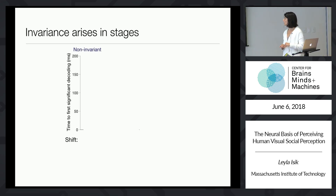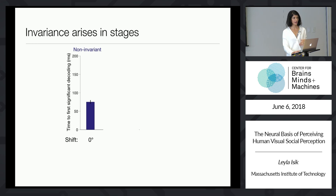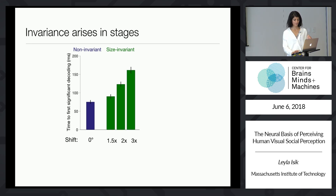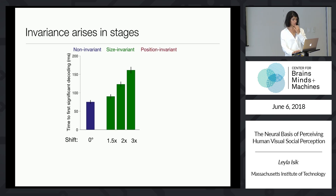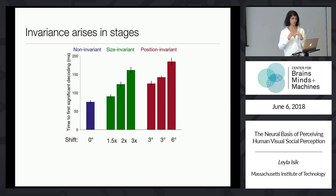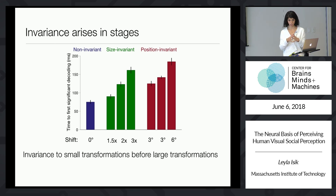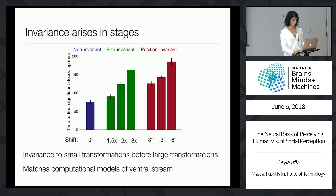We explicitly looked at the time to when you can first significantly decode. With no invariance — training and test images exactly the same — that happens at 60 to 80 milliseconds. For size invariance, the 1.5x scaling comes online much earlier than the 3x scaling. The same trend appears for position invariance: 3-degree position shifts are decoded much earlier than 6-degree shifts. This suggests that invariance to small transformations occurs before invariance to large transformations, and it verifies some computational models of the ventral stream — specifically convolutional neural network models.